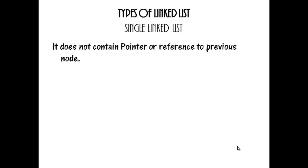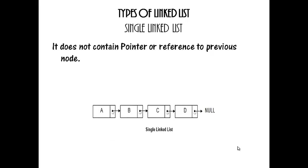The first one is single linked list. Single linked list is like a normal linked list that we discussed earlier. Each node stores the data of the node and the address of the next node. It does not contain a pointer or reference to the previous node. Look at the picture — you can understand.